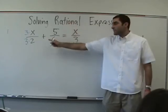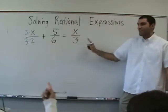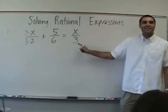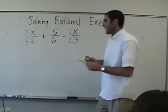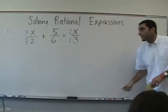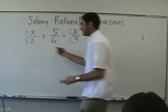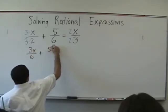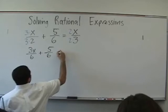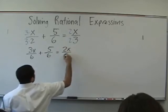What do we multiply top and bottom here to get six? Two. Nothing. Nothing, because it's already six. Look up and say two. Two. What do we multiply top and bottom here? Two. Two. Okay. This can be rewritten as 3x over 6 plus 5 over 6 equals 2x over 6.